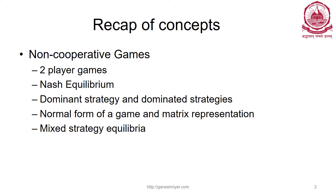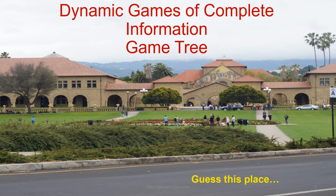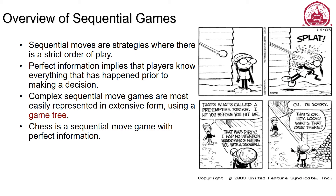Then come to this video. Dynamic games of complete information are typically represented as a game tree. Sequential games are games where moves and strategies follow a particular order. We analyze complete and perfect information, meaning players know the entire history of what has happened thus far. Complex sequential move games are most easily represented in extensive form. An example of a sequential move game is chess.